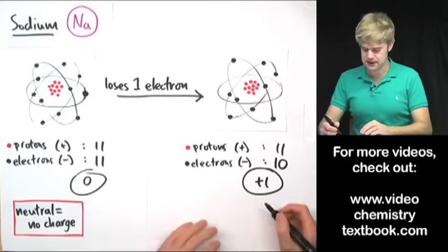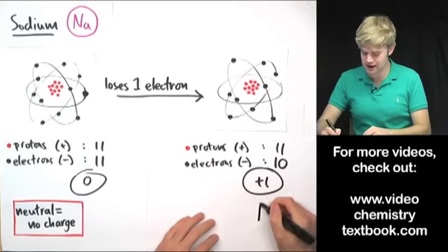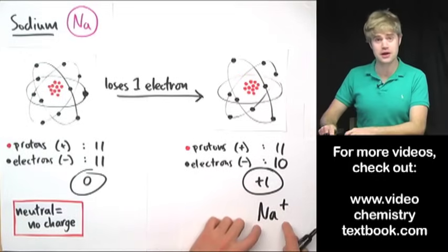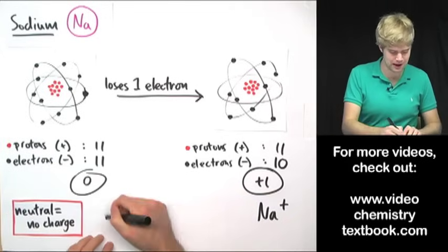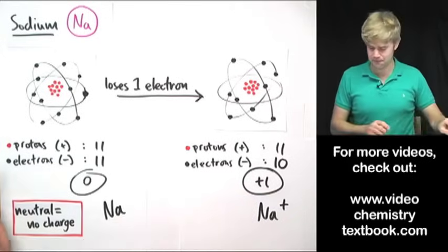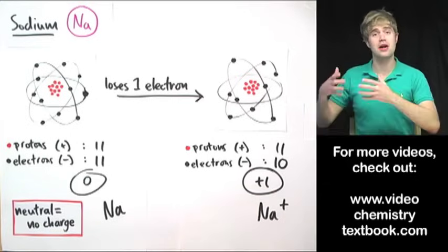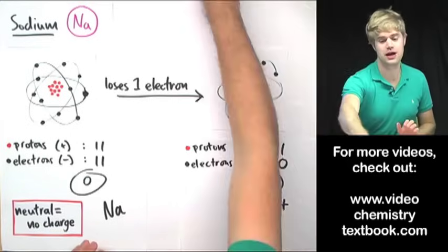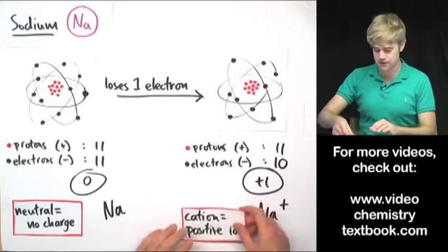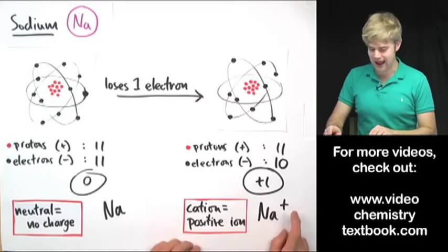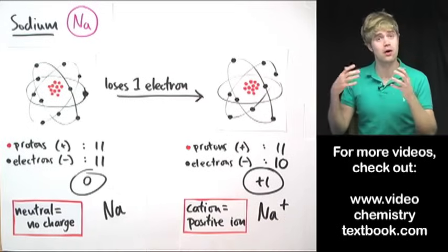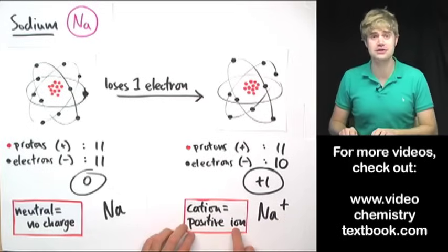And so I can write this if I want to talk about the atom, I can write it as Na plus to show that it has a positive charge, whereas this when I'm talking about a neutral atom I'll probably just write Na. So Na plus here is an example of an ion. It's an atom that has a charge and it's a specific type of ion. We have a name for this. We call it a cation which is what we call any ion that has a positive charge.